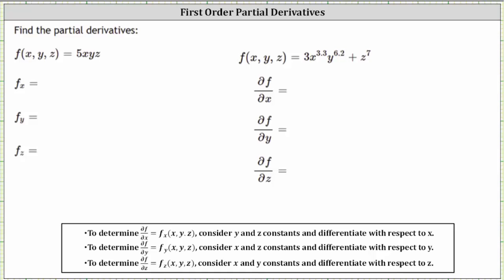For the first example, we are given f(x, y, z) equals 5xyz. To find the partial of f with respect to x, we treat y and z as constants and differentiate with respect to x.